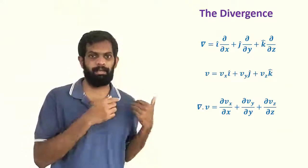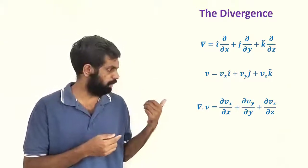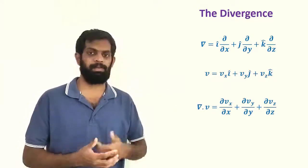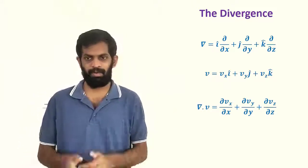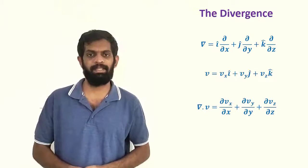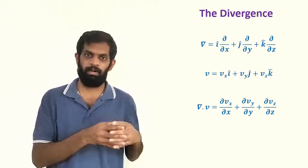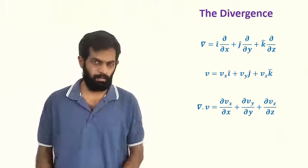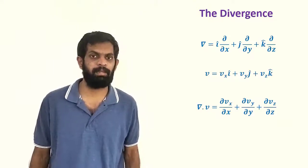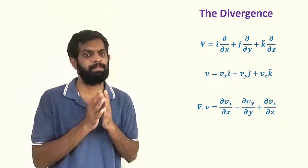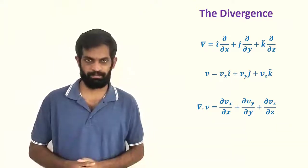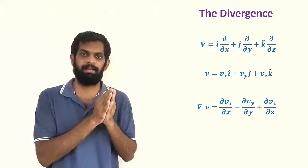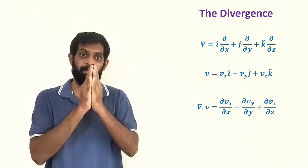Del dot v is equal to ∂vx/∂x plus ∂vy/∂y plus ∂vz/∂z. So del dot v is nothing but ∂vx/∂x plus ∂vy/∂y plus ∂vz/∂z. That is our divergence.